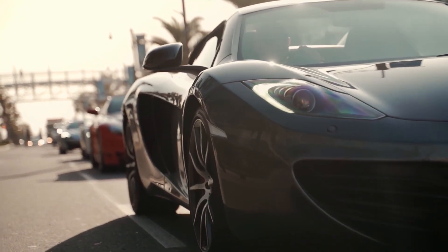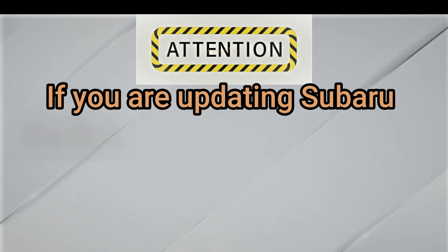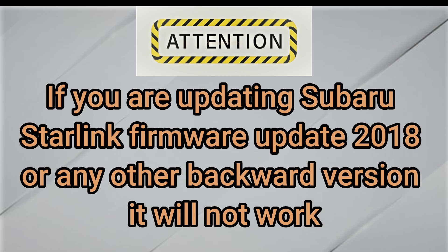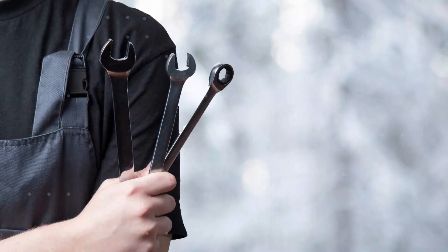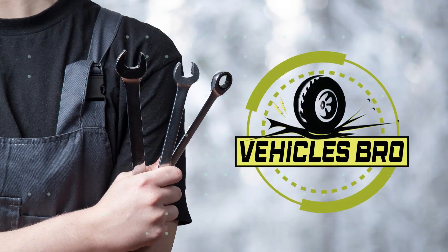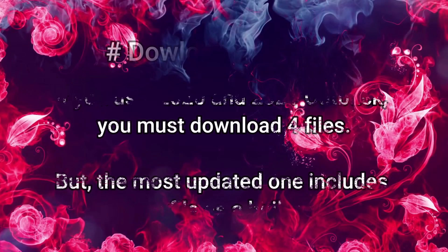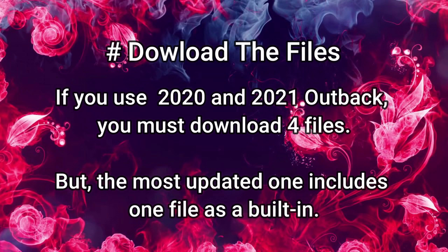Now follow the steps to update your Outback. If you are updating Subaru Starlink Firmware version 2018 or any other backward version, it will not work. Welcome to Vehicles Bro. Step 1: Firstly, you have to download the files. If you use a 2020 or 2021 Outback, you must download 4 files. But the most updated version includes 1 file as a built-in.